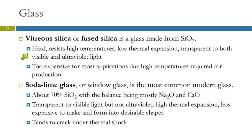Vitreous silica, or fused silica, is a glass made from silica. It's hard, resists high temperatures, has a low thermal expansion, and is transparent to both visible light and ultraviolet light. However, its high melting temperature of 1500 degrees makes it too expensive for most applications.